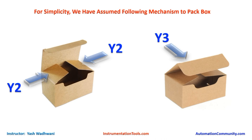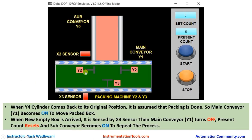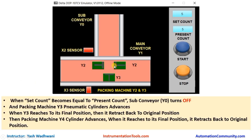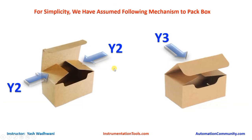For simplicity, we have assumed the following packing mechanism. We have two boxes: first, the Y2 cylinders activate and close two sides of the box, then they retract back to the original position. After that, the Y3 cylinder pushes and closes the remaining side of the box, so the box is fully packed.